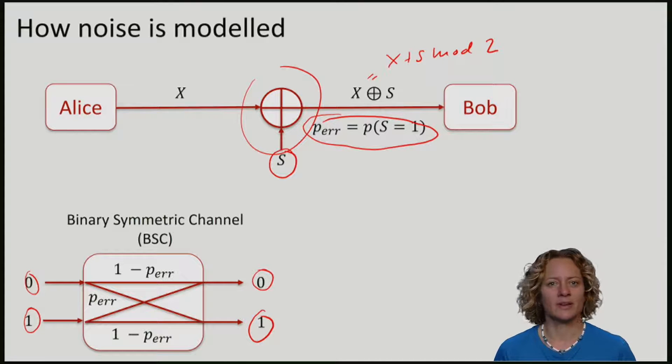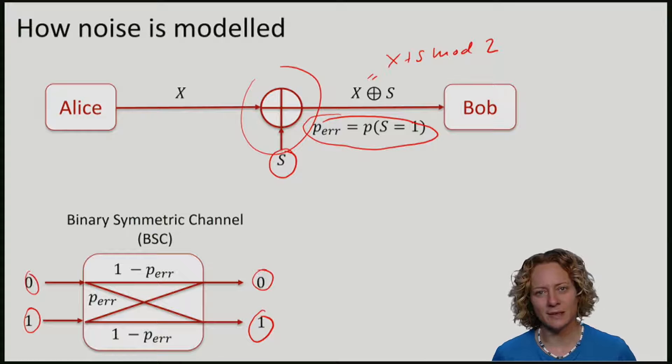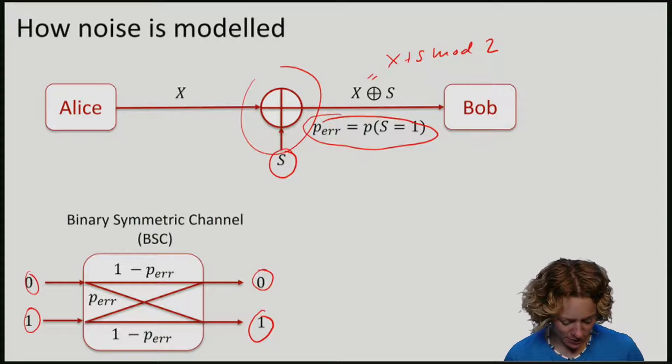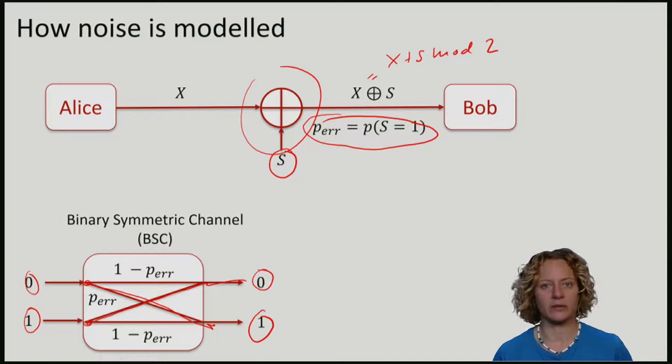However, if with some small probability, namely the probability of an error, the probability that s is 1, we will flip the bit and we will get the other outcome. So if I had 0 before, I get 1 afterwards, and if I had 1 before, I get 0 up here.